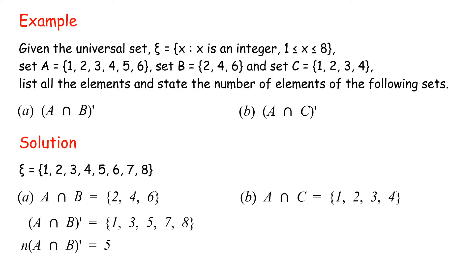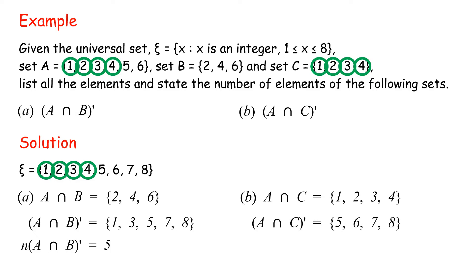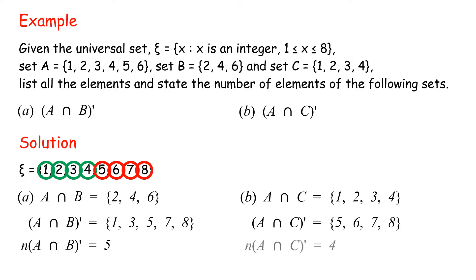B: A intersect C = {1, 2, 3, 4}. Complement of (A intersect C) = {5, 6, 7, 8}. Number of elements of complement of (A intersect C) = 4.